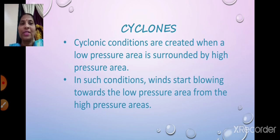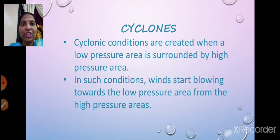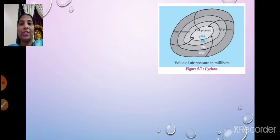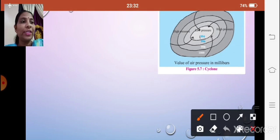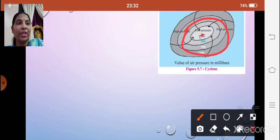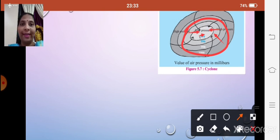In cyclonic conditions, the winds blow from the high pressure area towards the low pressure area. So the winds from the surrounding high pressure area start moving or blowing towards the low pressure area. You can see over here — this is the low pressure area, surrounded by the high pressure area. In such conditions, the winds will start blowing from the high pressure to the low pressure areas.